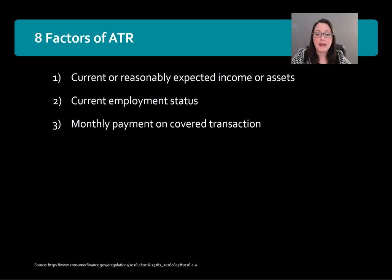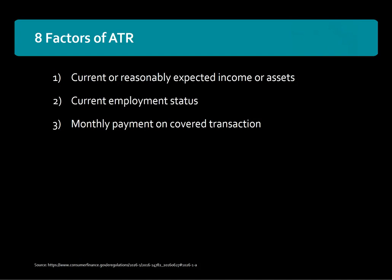Next is monthly payment on the covered transaction. This is calculated by assuming the loan will be repaid in substantially equal monthly payments during its standard term. If the loan is an ARM, the monthly payment must be calculated using the fully indexed rate — meaning the rate when the loan is recast or reset to the non-promotional rate — determined at time of closing or the introductory rate, whichever is higher. Special rules apply for balloon, interest-only, and negative amortization loans, but most lenders do not do those.